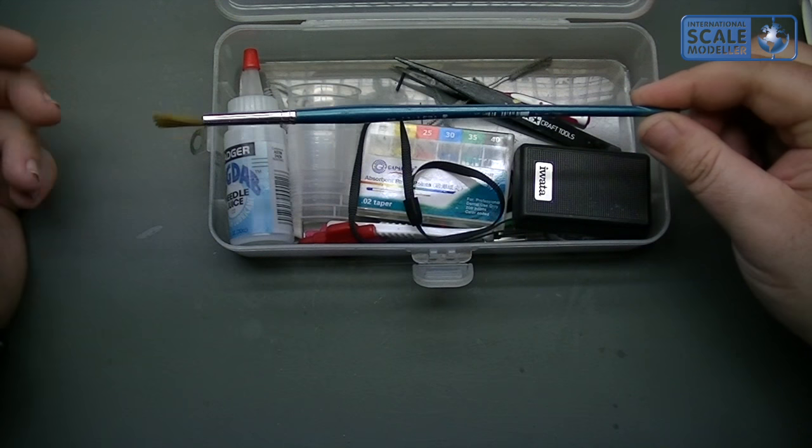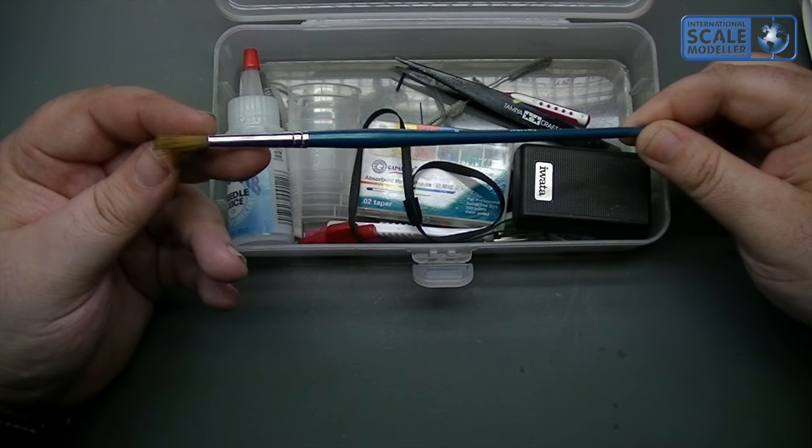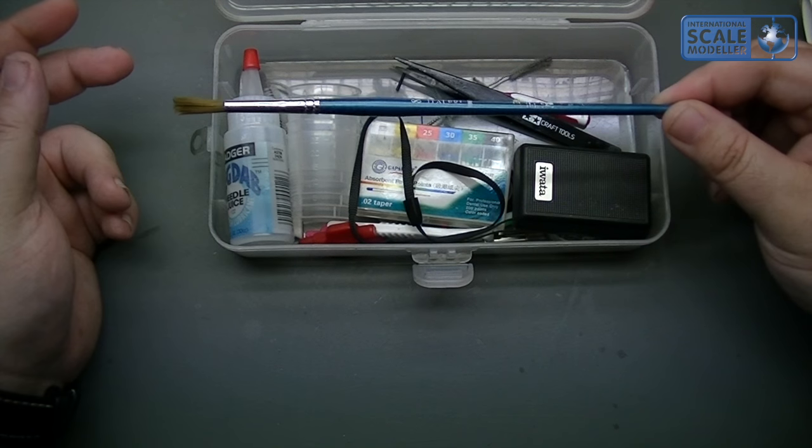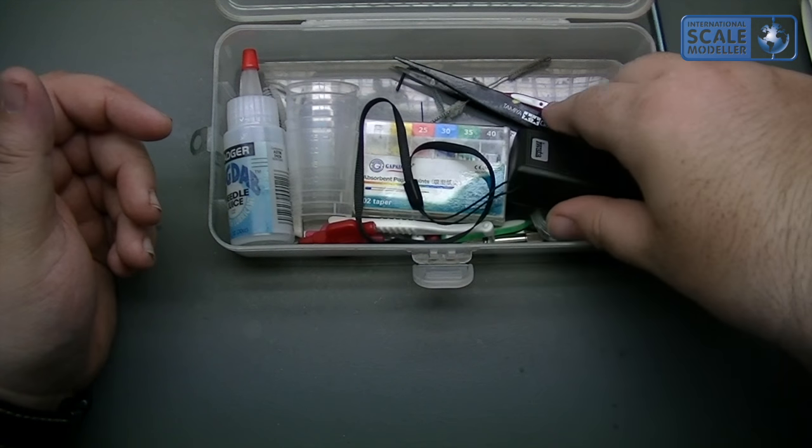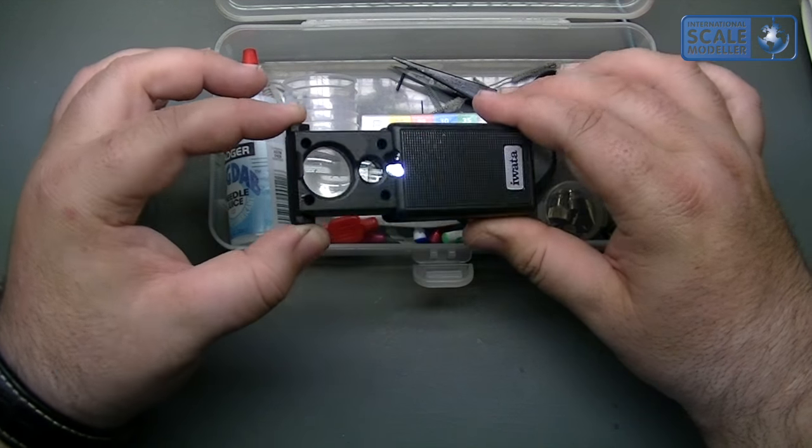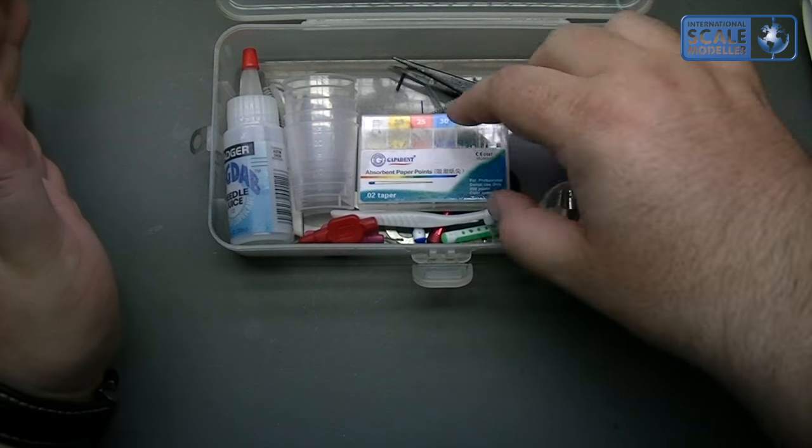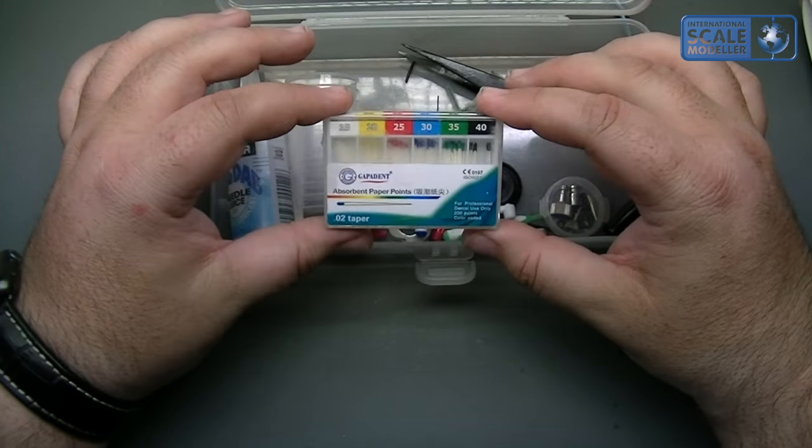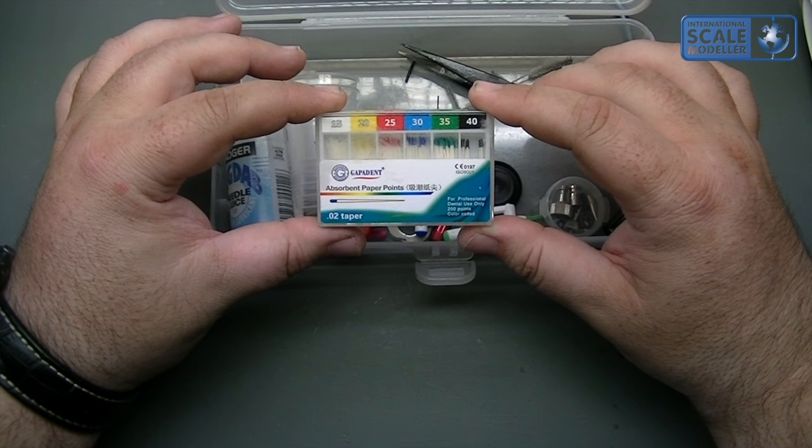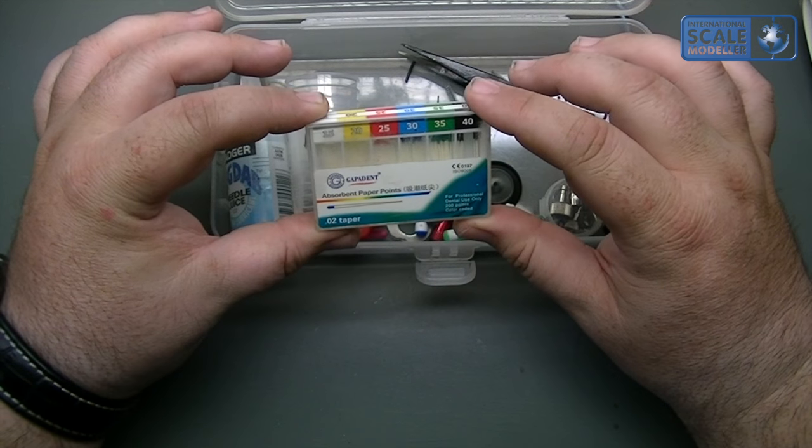A good brush. So this is a number 8. Nice long bristles to get right into that color cup. That's the brush I use for general day-to-day cleaning. I've got a little iWater magnifying glass which is handy for checking your needle nozzles, needles, etc. Don't really use it all that much to be fair. We've got some dentist paper points and I got this tip from Will Patterson and I think it might have been Paul Budzik. I forget now.